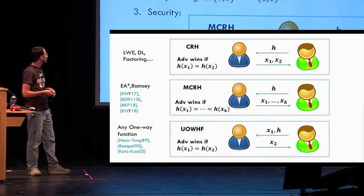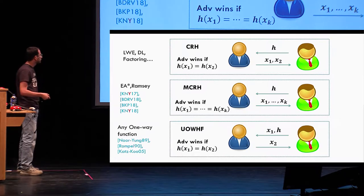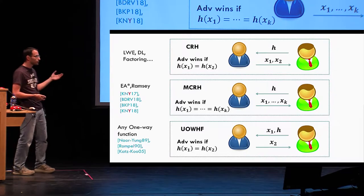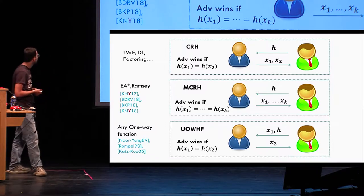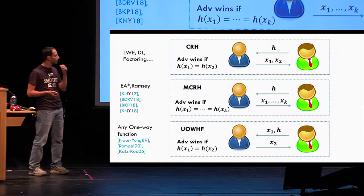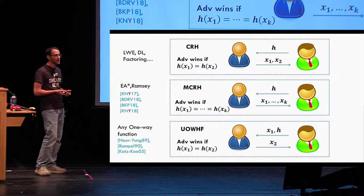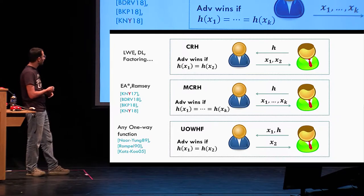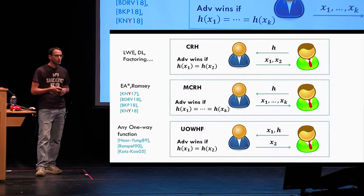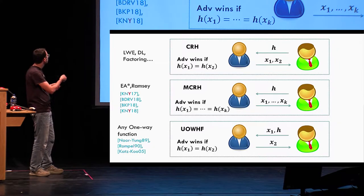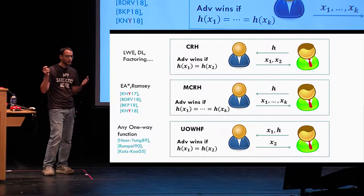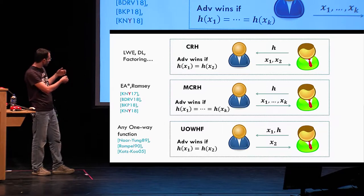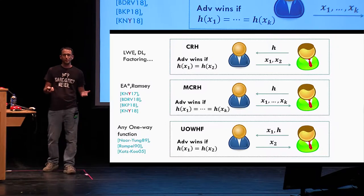These are three definitions of hash functions, summarized here. Universal one-way hash functions are the weakest form of the three — sufficient for things like the hash-and-sign paradigm and constructable from any one-way function. CRH can be built from many assumptions: LWE, discrete log, factoring, and more. Recently, MCRH has been shown constructable under even weaker assumptions than CRH, for example some notion of entropy approximation, and it's still useful for many applications.